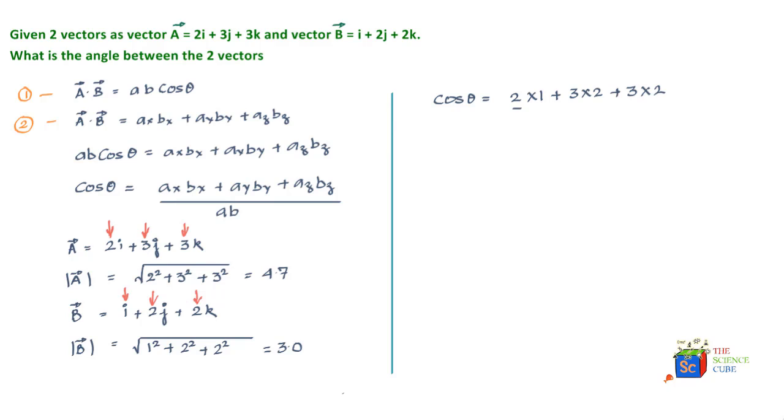Divided by |A| and |B|, which we have calculated, divided by 4.7 into 3.0, which gives cos θ is equal to 0.992.